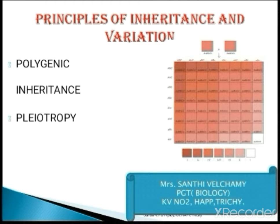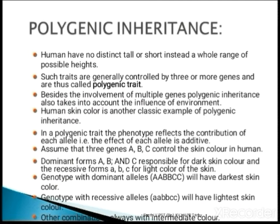Hello children. Today we are going to see the continuation of the chapter Principles of Inheritance and Variation. We are going to cover polygenic inheritance and pleiotropy. In polygenic inheritance, one character is controlled by more than one gene.